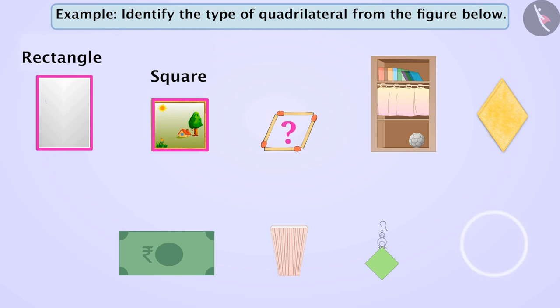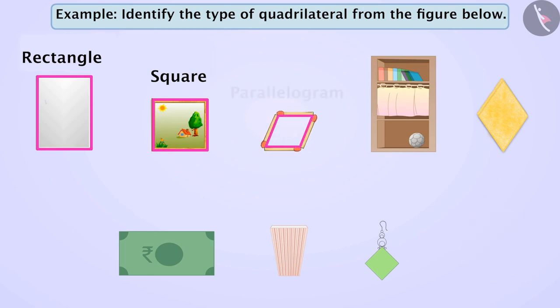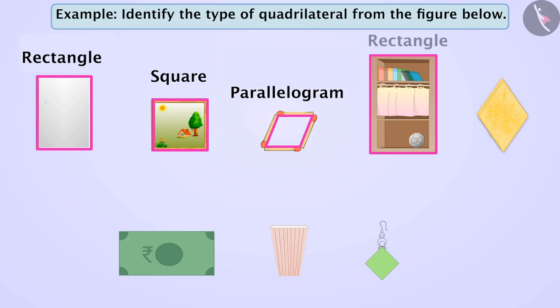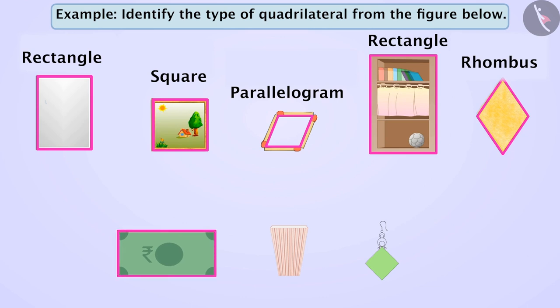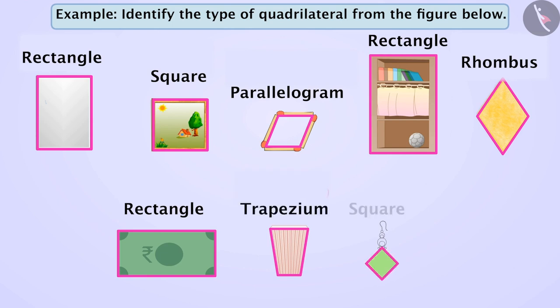Think for a while. This seems to be a parallelogram. In the same way, this appears to be a rectangle. This appears to be a rhombus. This seems to be a rectangle. This seems to be a trapezium. And this appears to be a square.